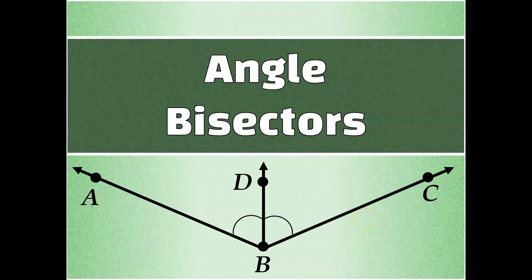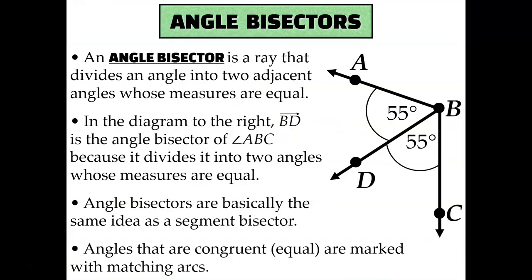Let's talk about angle bisectors. An angle bisector is a ray that divides an angle into two adjacent angles whose measures are equal.